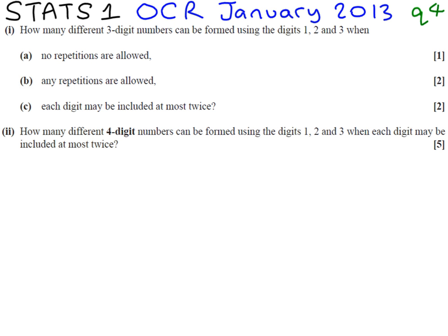So it's a permutations and combinations question because we're talking about arrangements and ordering numbers. How many different three digit numbers can be formed using the digits 1, 2, 3 and part A says no repetitions allowed.